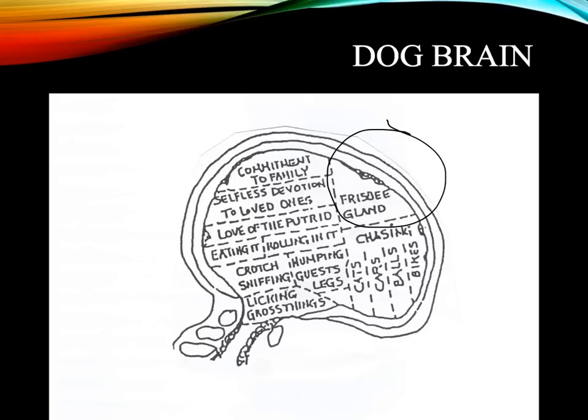They have the chasing cortex — they chase bikes, they chase balls, they chase cars, and they chase cats. And of course, this is all again not accurate. This is just having fun.